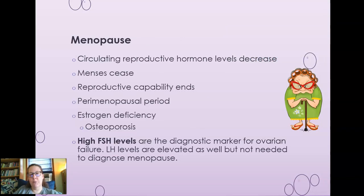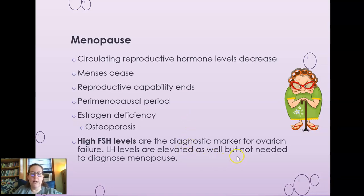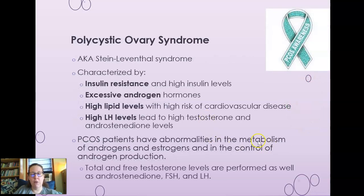Menopause occurs when circulating reproductive hormone levels start decreasing, marking the end of the reproductive age. Periods stop and reproductive capability ends because ovulation ceases. There is a perimenopausal period where the menstrual cycle starts to lessen in duration and frequency. You'll see estrogen deficiency, which can lead to osteoporosis. High FSH levels are diagnostic markers for ovarian failure and also typical of menopause. High LH and FSH are diagnostic of menopause, though blood testing is rarely necessary unless someone goes through early menopause.